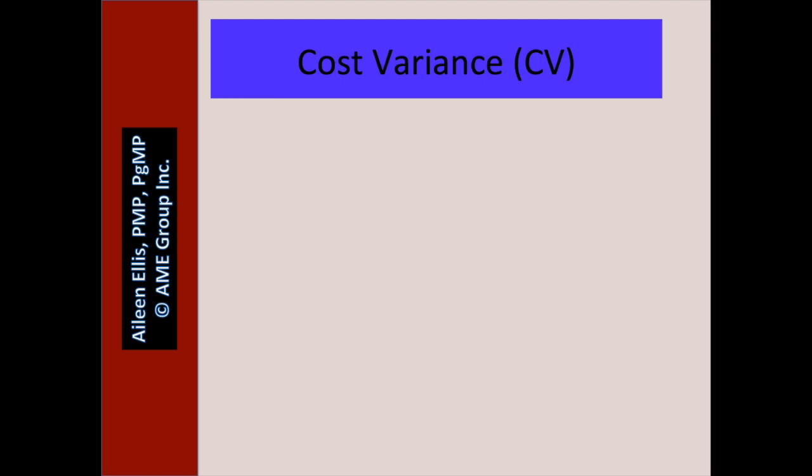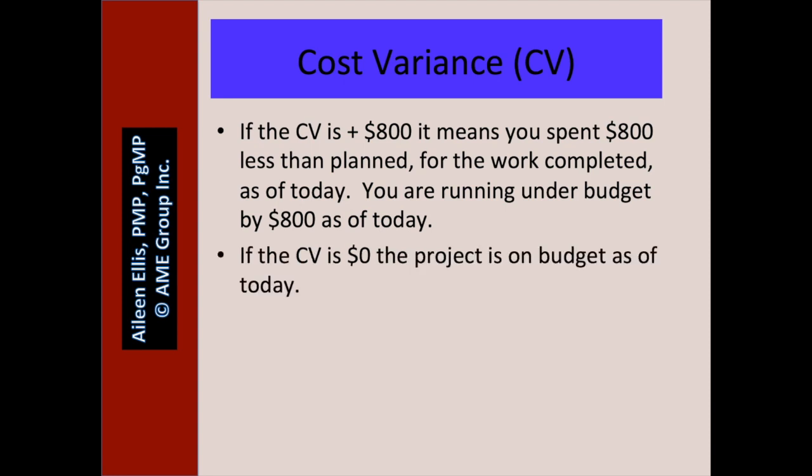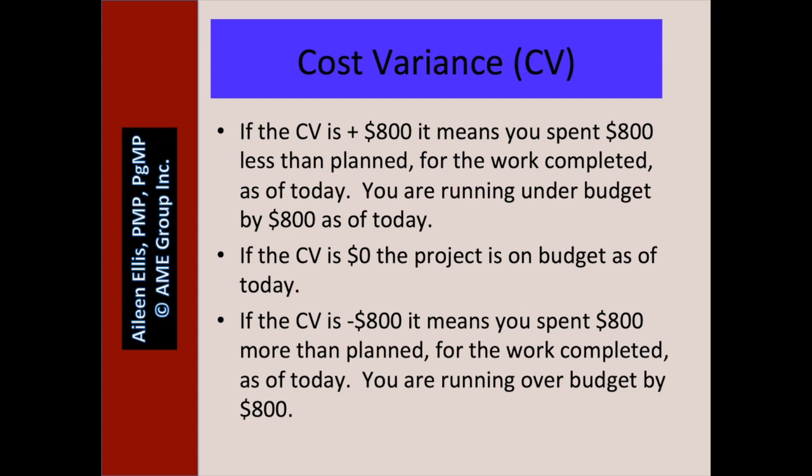Let's add a little more with an example. If the cost variance is a positive $800, it means you spent $800 less than planned for the work completed as of today — you are running under budget by $800. If the cost variance is zero, the project is on budget as of today. And if the cost variance is a negative $800, it means you spent $800 more than planned for the work completed as of today — you are running over budget by $800.